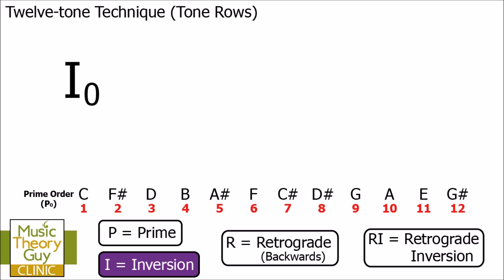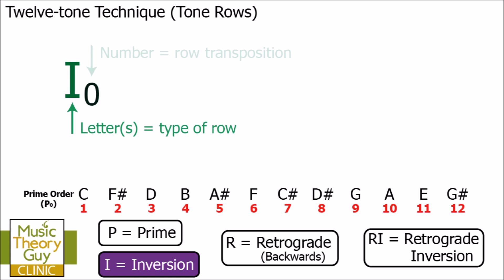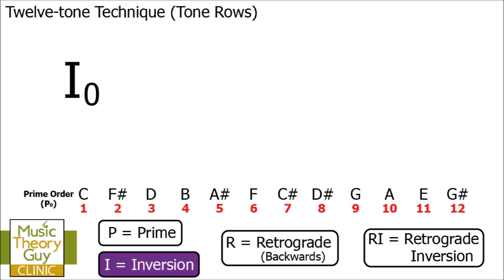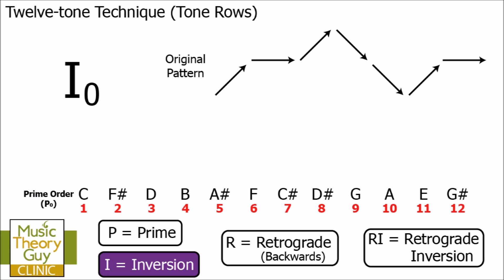Let's jump straight in and look at I0. The letter represents the type of row — in this case 'I' means inversion — and the number refers to the row transposition, meaning the moving of notes up or down. Before I explain I0 in detail, I want you to imagine a melody. These arrows graphically represent that melody: the first note goes up, then the note stays the same, then it goes up again, then down, down again, then up, and stays the same.